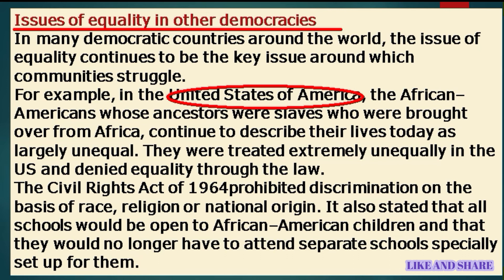That is how the Civil Rights Act of 1964 came into existence in the USA. According to the Civil Rights Act of 1964, it completely prohibited discrimination on the basis of race, religion, or national origin. This Act also stated that all schools would be open to African American children, and they would no longer have to attend separate schools especially set up for them, as had been the case before 1964.